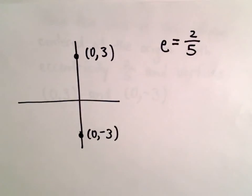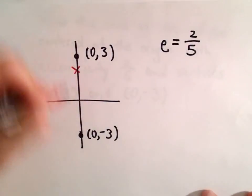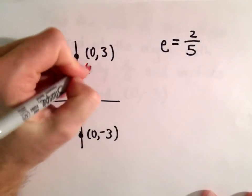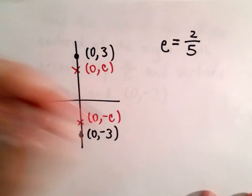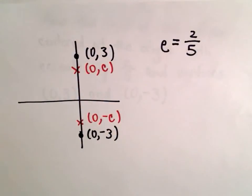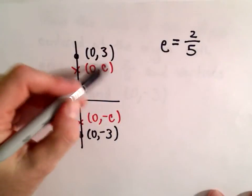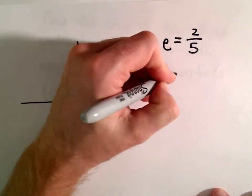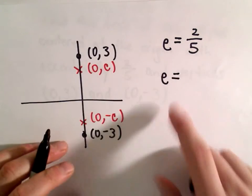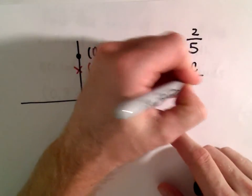Okay, so in this case, our foci will be of the form (0, c) and (0, -c). So all we need to do is deduce the value for c. Recall that there's this relationship: the eccentricity equals c over a.